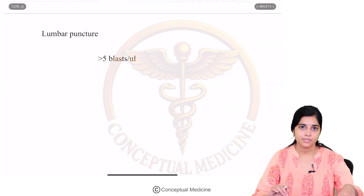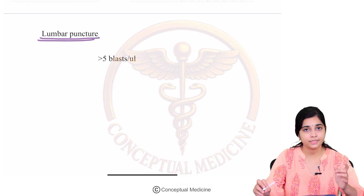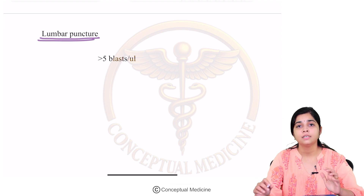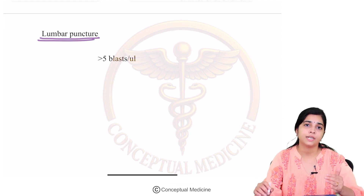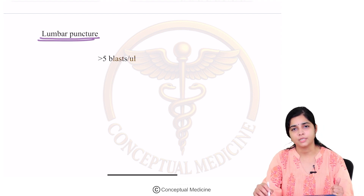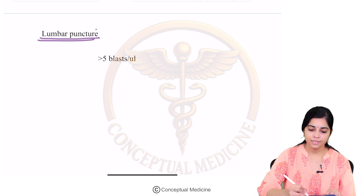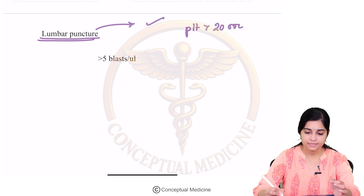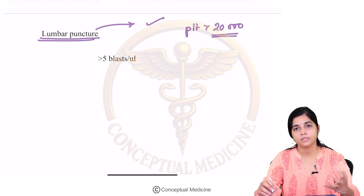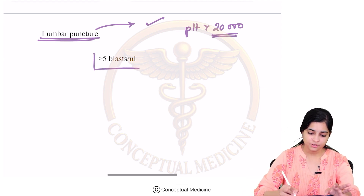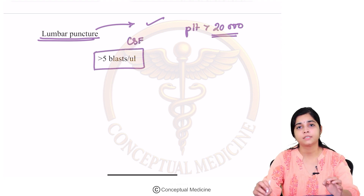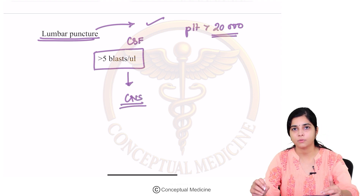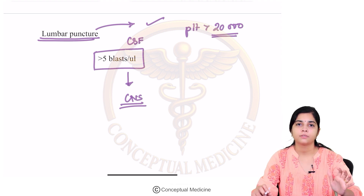A lumbar puncture is required in ALL, unlike in AML. In almost 100% of cases, especially in childhood and adolescent ALL, there is evidence of CNS involvement. Every patient before initiating treatment should undergo a lumbar puncture, with a platelet count of more than 20,000 as the cutoff. In the CSF analysis, more than 5 blasts per microliter indicates CNS involvement requiring treatment.